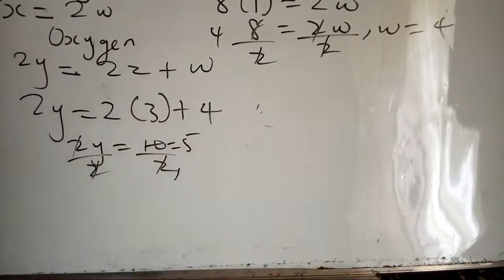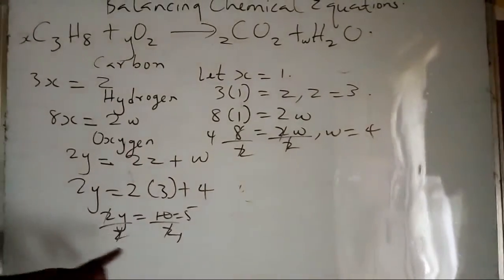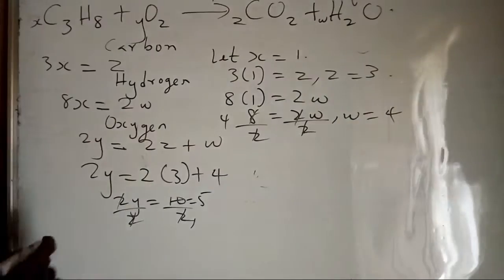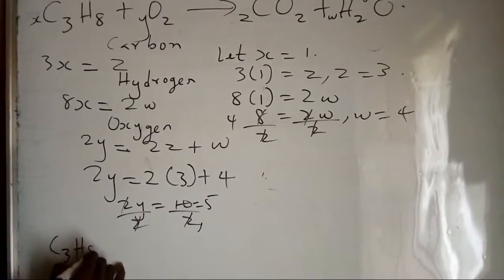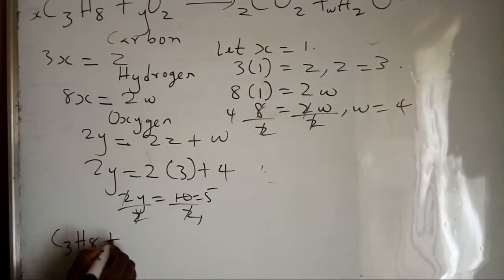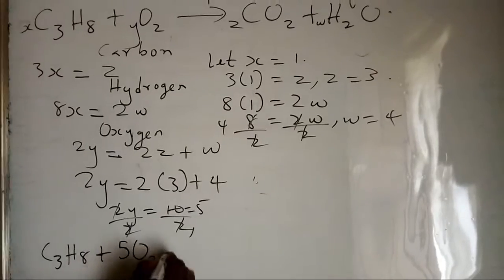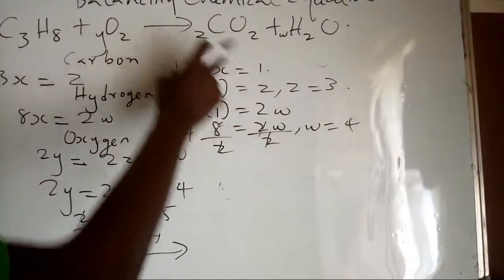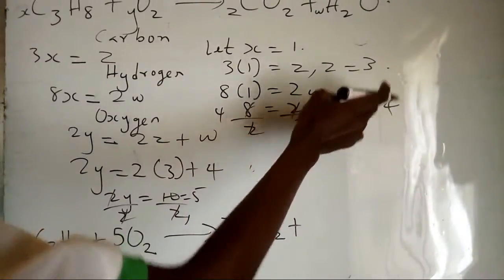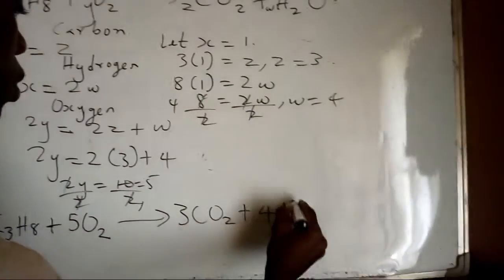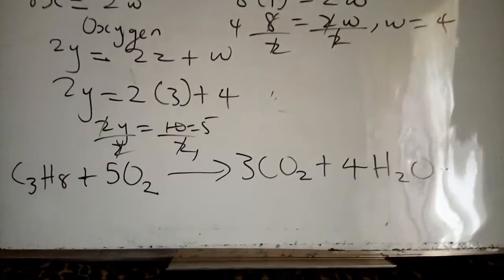Now rewrite your equation and put in the number of moles. We have x=1 so C3H8, plus y=5 so 5 O2, gives us z=3 so 3 CO2, plus w=4 so 4 H2O. You can do an atom count to check — it is correct.